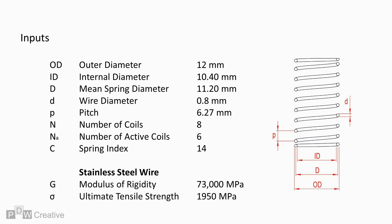Material choice is also important. For the following worked examples, we will use a stainless steel with a modulus of rigidity of 73,000 MPa and an ultimate tensile strength of 1,950 MPa.